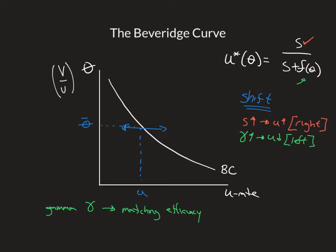I can put these on the curve so you can see. This would be the Beveridge curve with an increase in the separation rate, holding all else constant, whereas this would be the new Beveridge curve with an increase in gamma, holding all else constant.